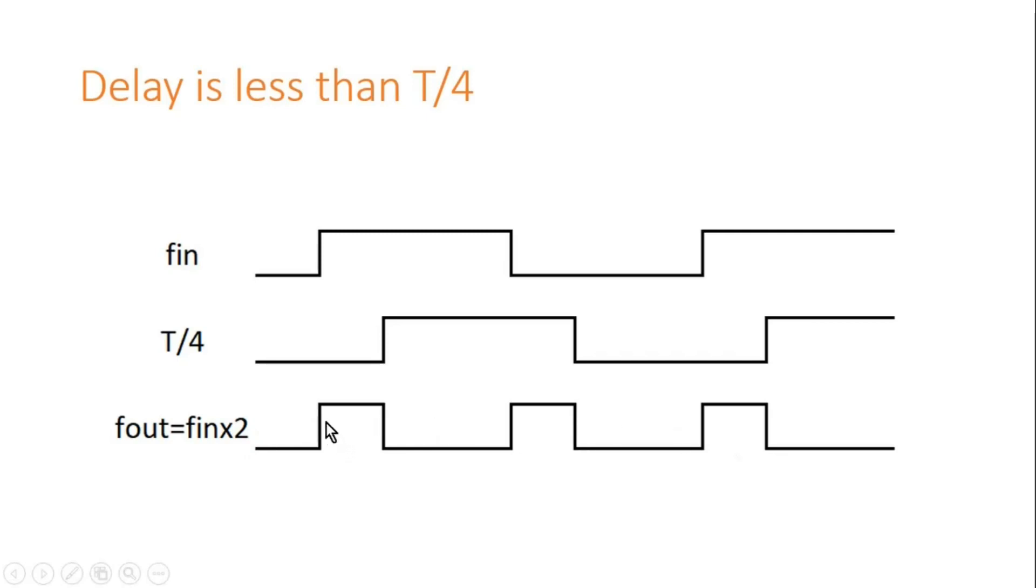Here your duty cycle will be less than 50 percent because ton time is reduced. If you see this fin, this is T/4. Put XOR gate: 1, 0, 1, 1, 1, 0, 0, 0, 0. So if you see, toff is quite more than ton, so duty cycle is reduced if delay is less than T/4. Now let us consider the second case.